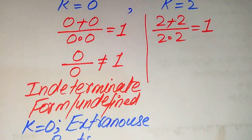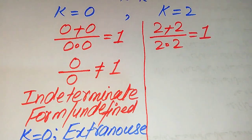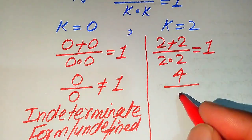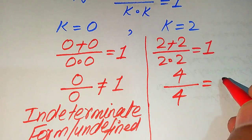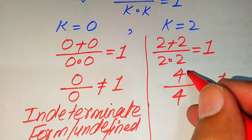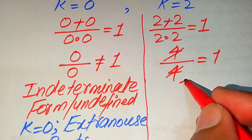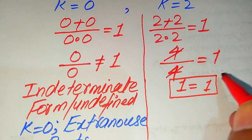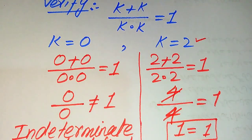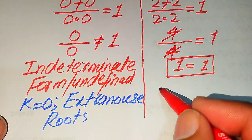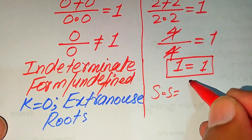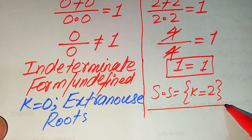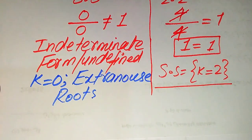For k equals 2: 2 plus 2 equals 4 divided by 2 multiplied by 2, which equals 4, giving 4 divided by 4 equals 1. These cancel out and we get 1 equals 1, confirming that k equals 2 satisfies the given equation. So the solution set is k equals 2.